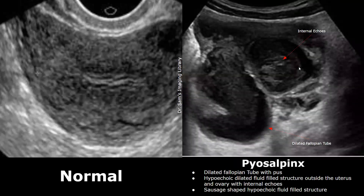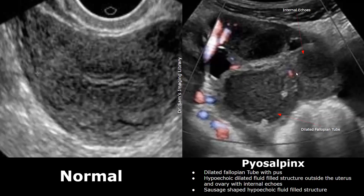A piosalpinx refers to a pus-filled fallopian tube. It has almost all the same features as hydrosalpinx except for one: internal echoes inside the structure. Medium-level echoes will be seen inside the structure. Here is another case showing piosalpinx — internal echoes can be seen inside this dilated, fluid-filled structure outside the uterus and ovary.